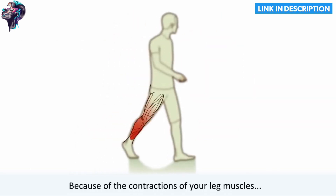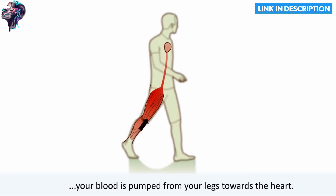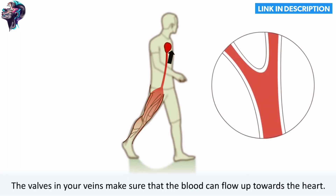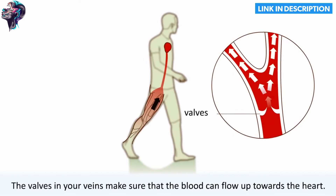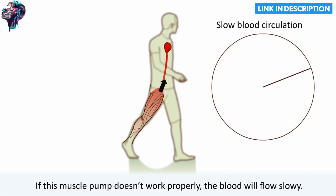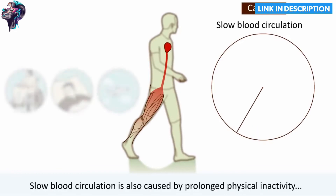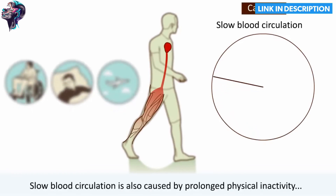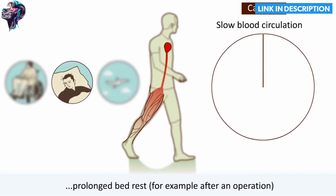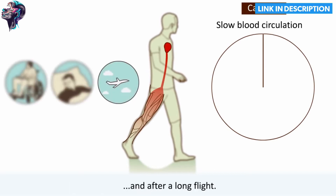Because of the contractions of your leg muscles, your blood is pumped from your legs towards the heart. The valves in your veins make sure that the blood can flow up towards the heart. If this muscle pump doesn't work properly, the blood will flow slowly. Slow blood circulation is also caused by prolonged physical inactivity, prolonged bed rest after an operation, and after a long flight.